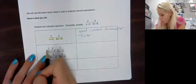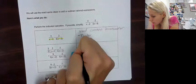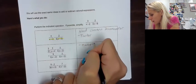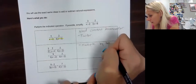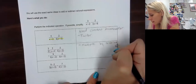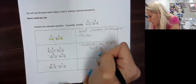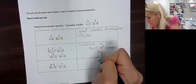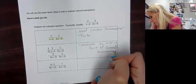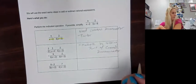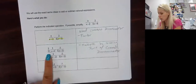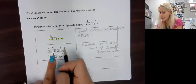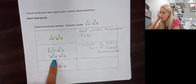We know from before — whatever we do in the bottom, we must do to the top. We're missing a 3 here, so we need to multiply the numerator by 3 as well. Multiply that out, we get 9. This stays the same because we weren't missing anything. And as you can see, we have that common denominator now.